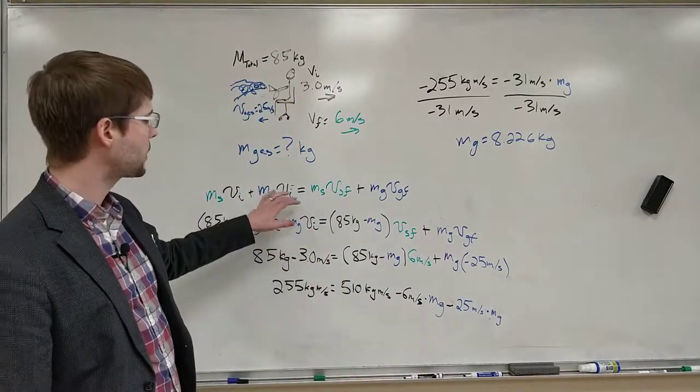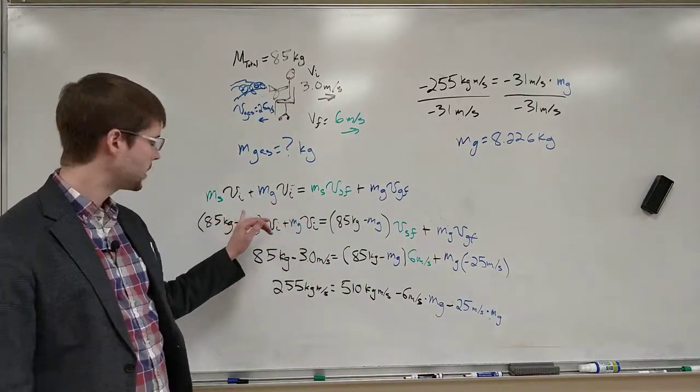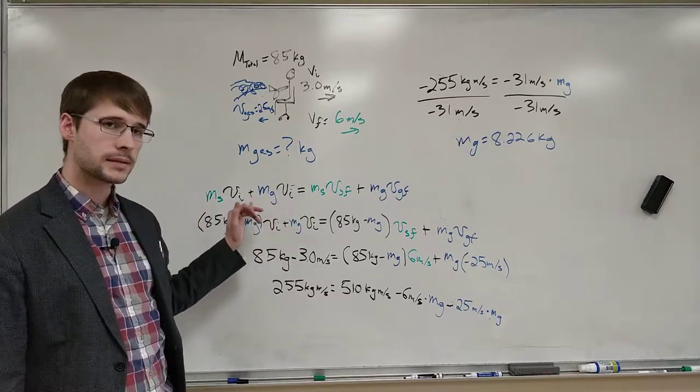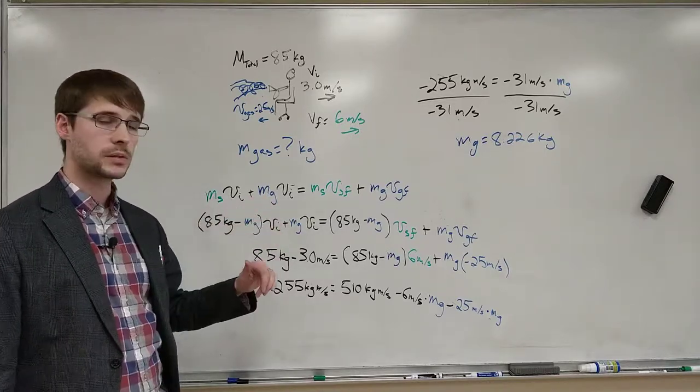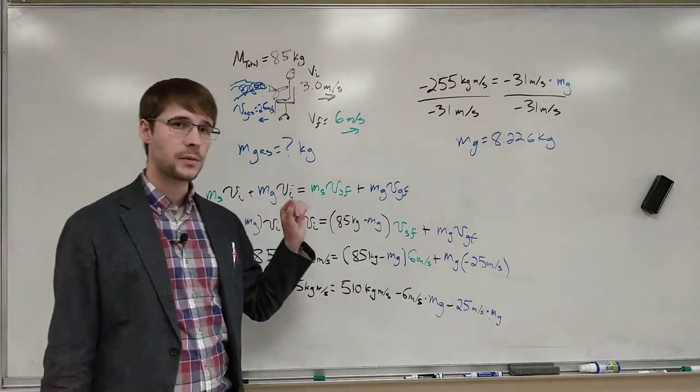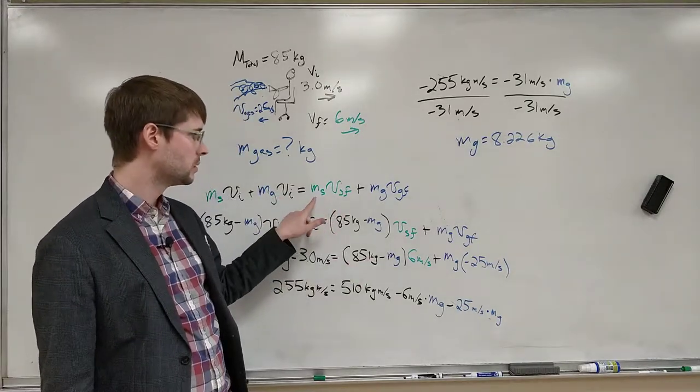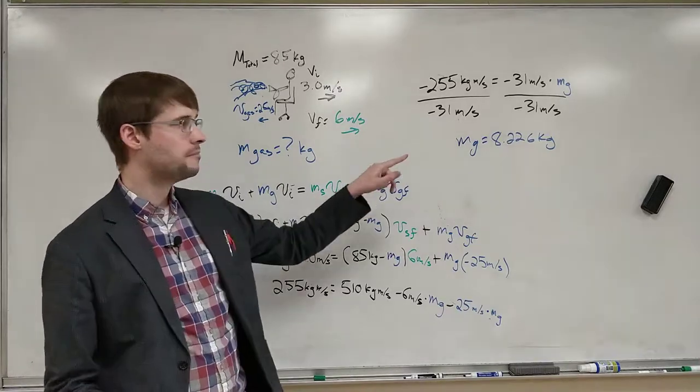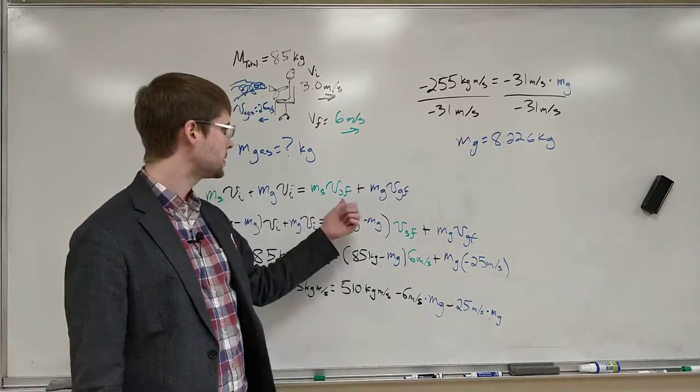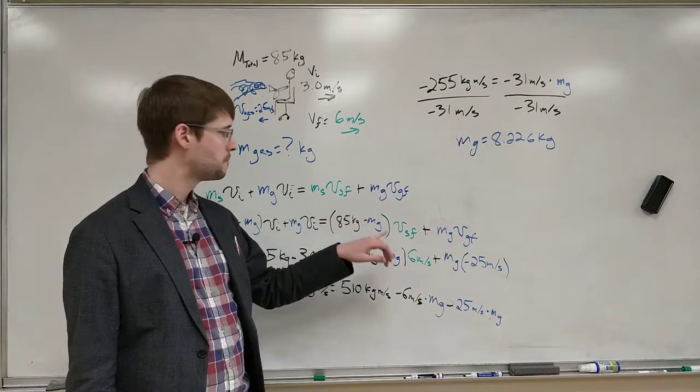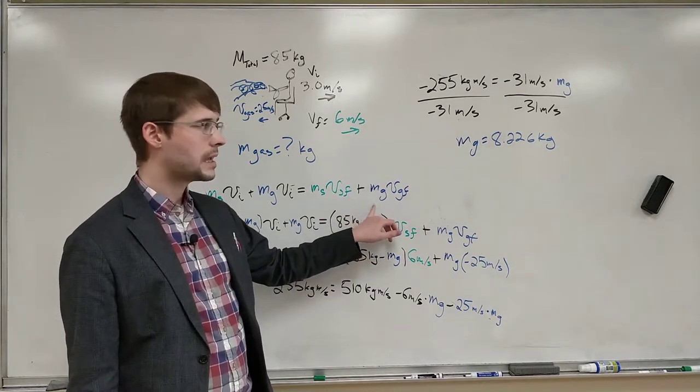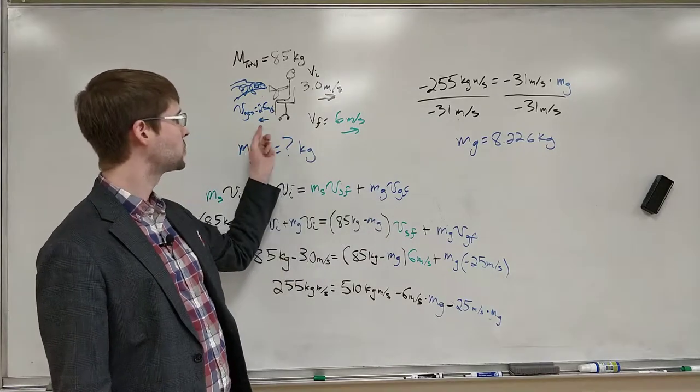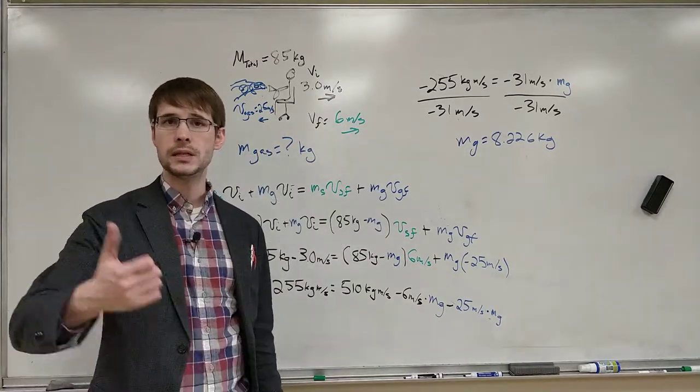And we get that the mass of the gas is 8.226 kilograms. And so if we looked through, went back to our original equation and plugged everything in, the masses and velocities, that's 85, the total mass, times 3 meters per second. That number that you get there, if you want to go back and check, should be equal to the mass of the student left over, which is going to be 85 minus 8.226 times 6 meters per second plus this 8.226 times negative 25 meters per second because that gas is shooting in the other direction.